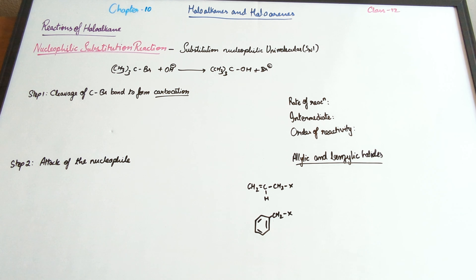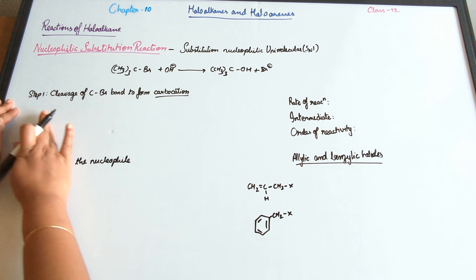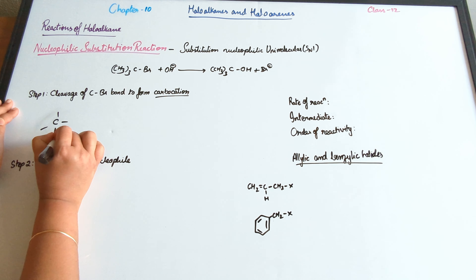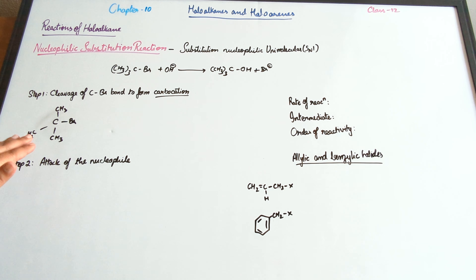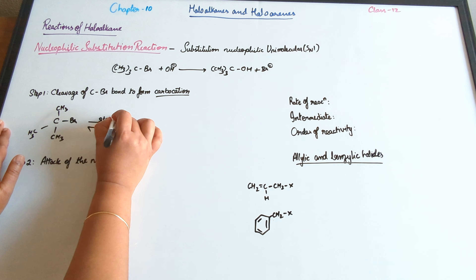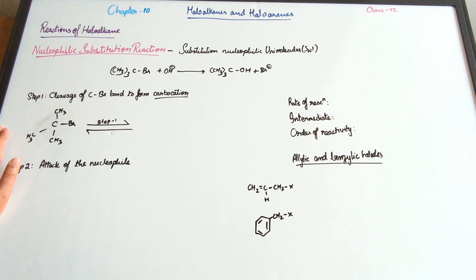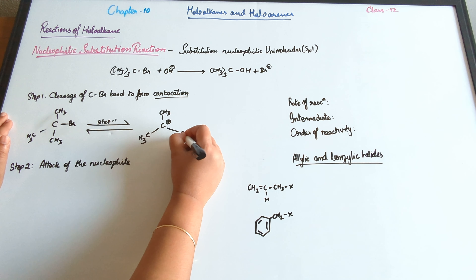The second step is the attack of the nucleophile. For the first step — cleavage of the C-Br bond — we have three CH₃ groups and a Br attached to the central carbon. The Br is going to get removed, leading to the formation of a carbocation. Because bromine is more electronegative than carbon, it leaves the carbon atom with a positive charge, giving us a carbocation.